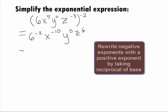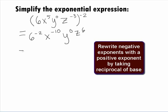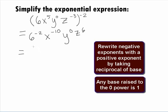Looks like our 6 and x both have a negative exponent. This means we need to take the reciprocal of those two bases to rewrite them as positive bases. We also have a y raised to the 0 power, which will simplify to be 1.